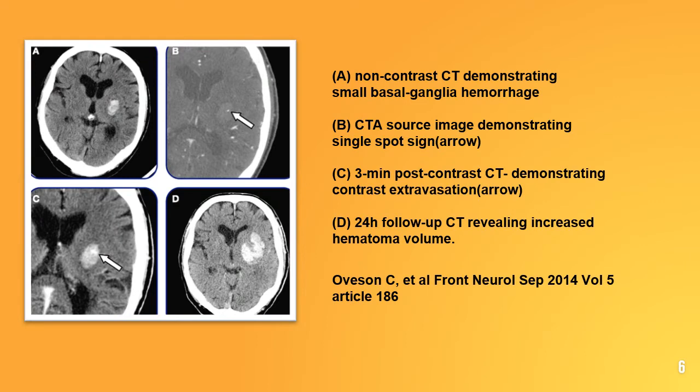Here is an illustration of the spot sign. A is a non-contrast CT demonstrating small basal ganglia hemorrhage. B is a CTA source image demonstrating a single spot sign. C is a 3-minute post-contrast CT demonstrating contrast extravasation, and D is a 24-hour follow-up CT revealing increased hematoma volume. This is from the article by Overson et al.